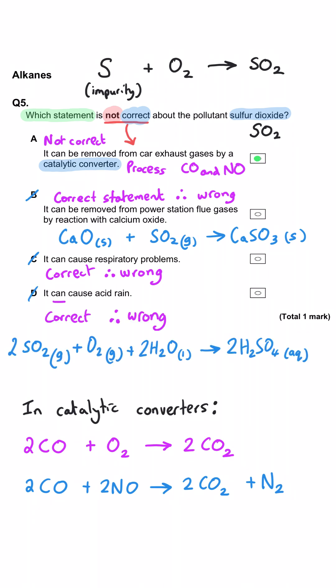sulfur dioxide can dissolve in the moisture in the air and is converted into sulfuric acid which can cause rain to become acidic. So again, a true statement which is therefore wrong for this question.